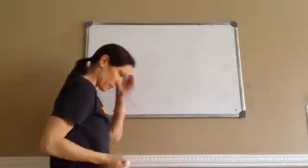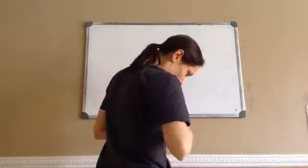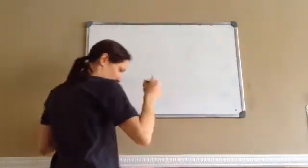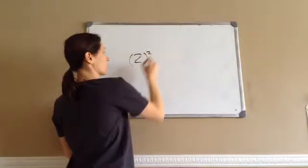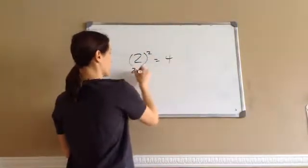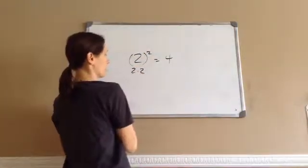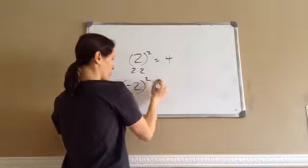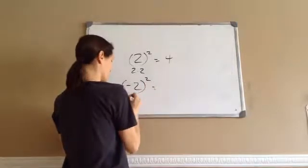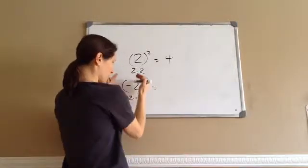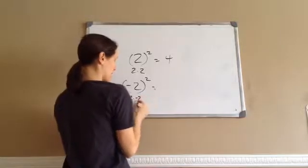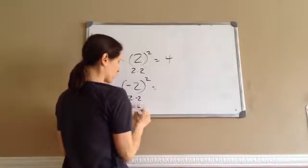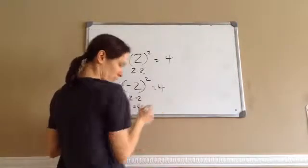Before we get started, I want to revisit square roots real quick. So, for example, 2 squared is 4 — 2 times 2. But what about negative 2 squared? Hopefully you remember that negative 2 times negative 2, when it's inside the parentheses, still gives us a positive answer: 4.